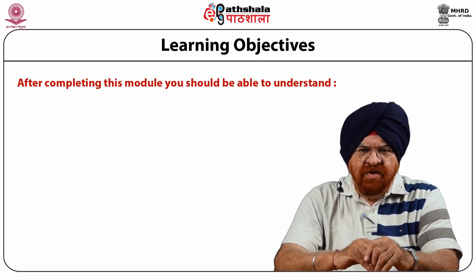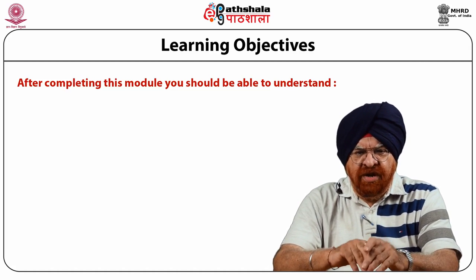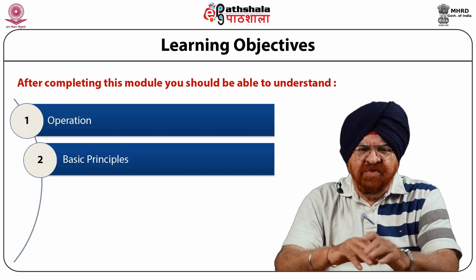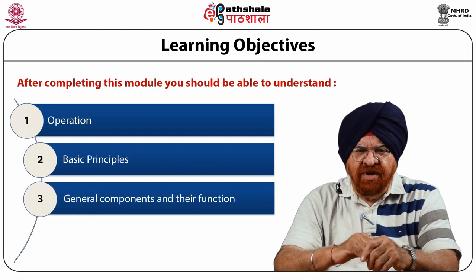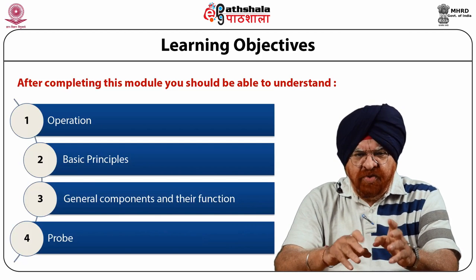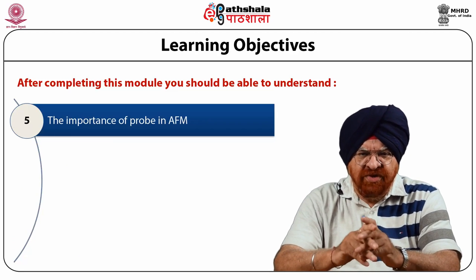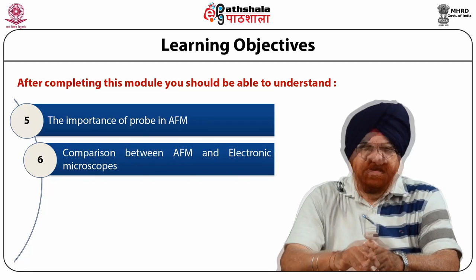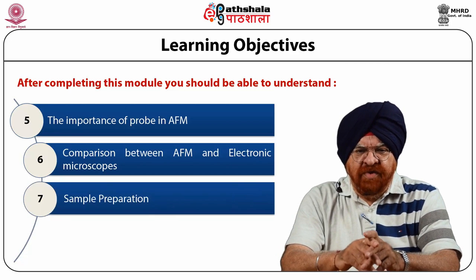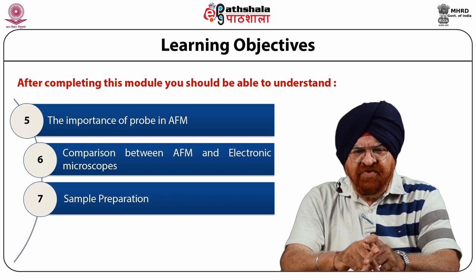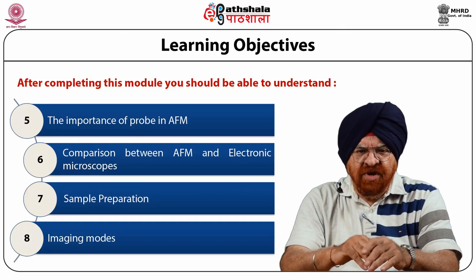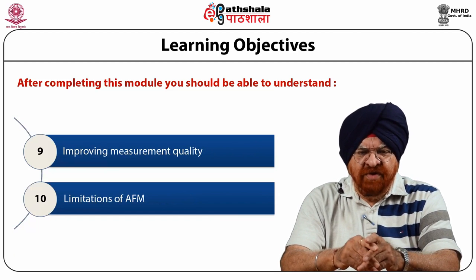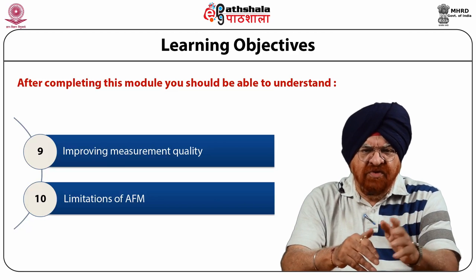After completing this module, you will be in a position to understand the basics — how we operate AFM, what is the basic principle involved, the general components and their functions, what probe is used and the importance of the probe in AFM studies, and a comparison between AFM and other electronic microscopes. We will cover sample preparation, imaging modes, improved measurement quality, and finally the limitations of AFM.